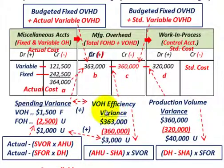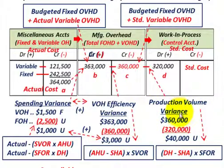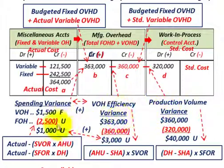And the volume efficiency variance is the difference between actual hours used and standard hours allowed, multiplied by the standard variable overhead rate. That relates these variances to their underlying equations.